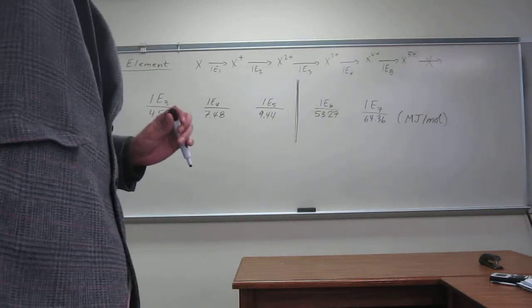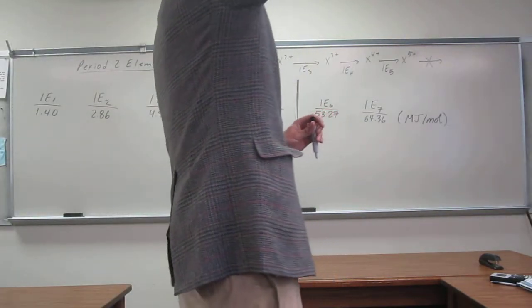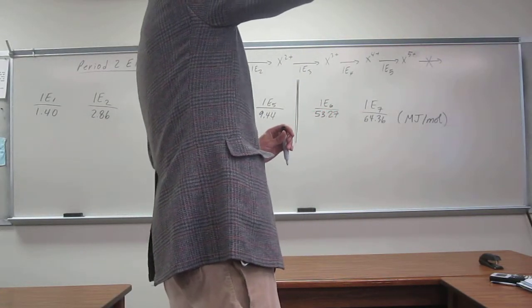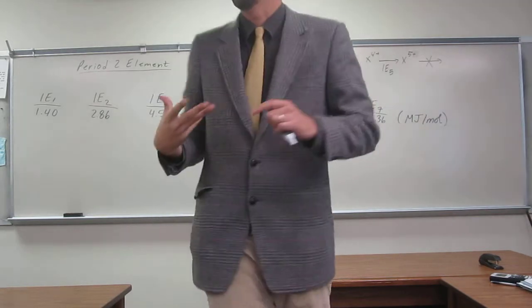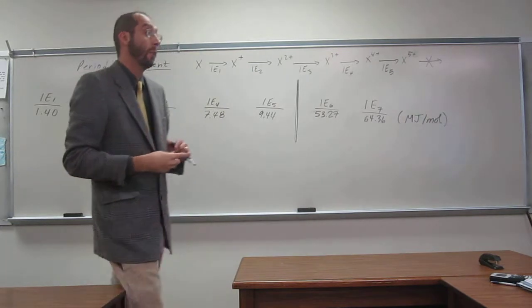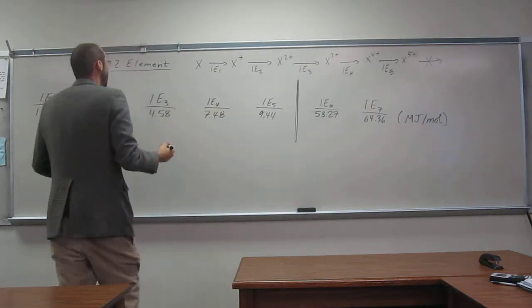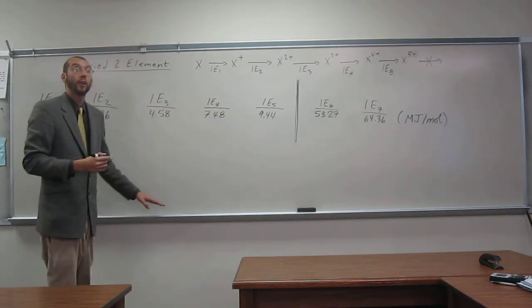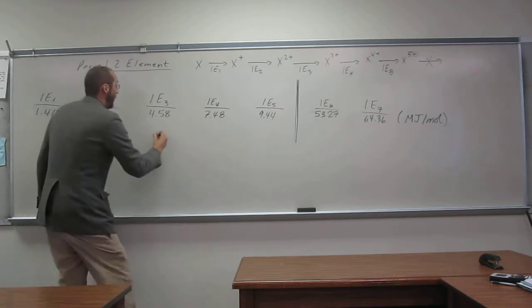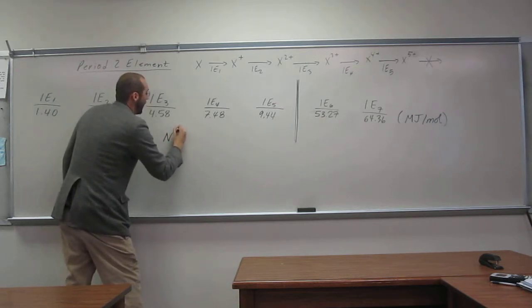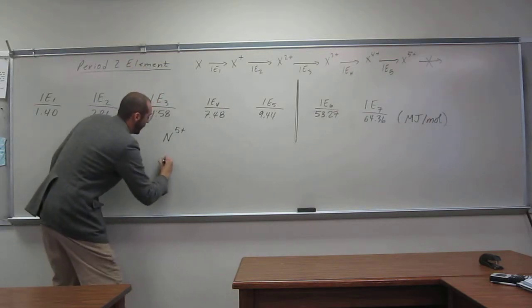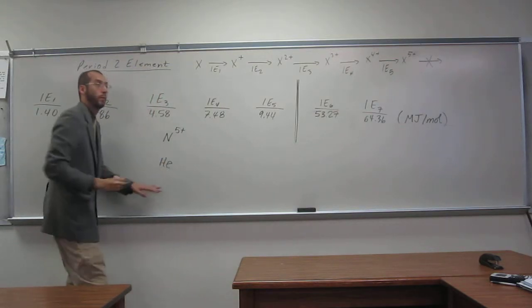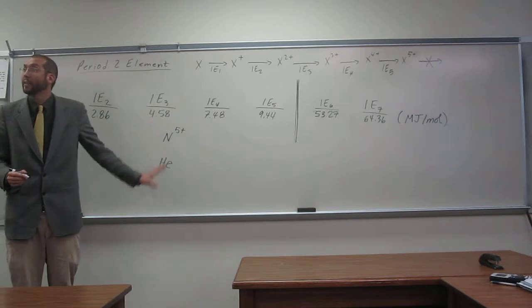So if we take nitrogen and we remove 1, 2, 3, 4, 5 electrons, what does it become? Equivalent, helium. So what we're saying is that the electron configuration of nitrogen 5 plus is equivalent to the electron configuration of helium. Is everybody okay with that statement?